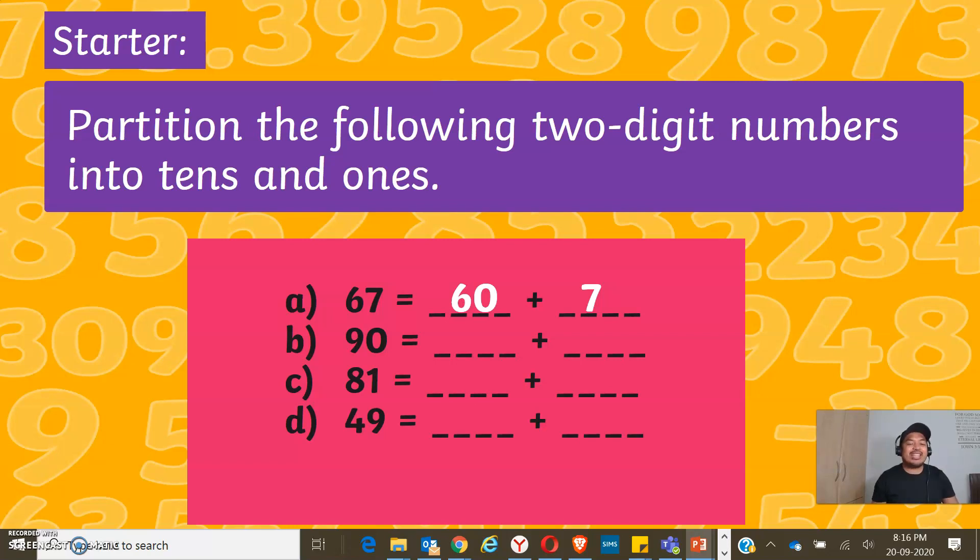Pause the video and write your answers. Time is up. Now let's reveal the answers. For 90, we got 90 plus 0. For 81, 80 plus 1. And 49, 40 plus 9. Did you get all the correct answers? Well done. If not, stay tuned.